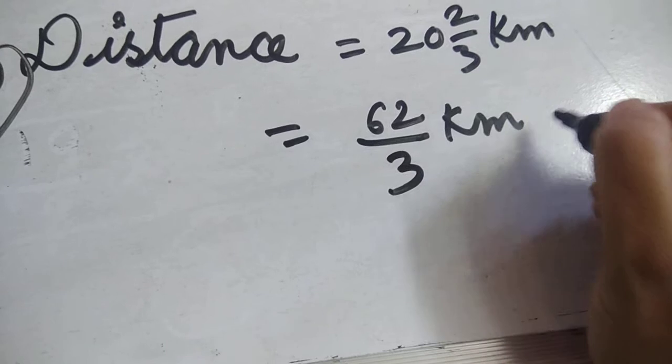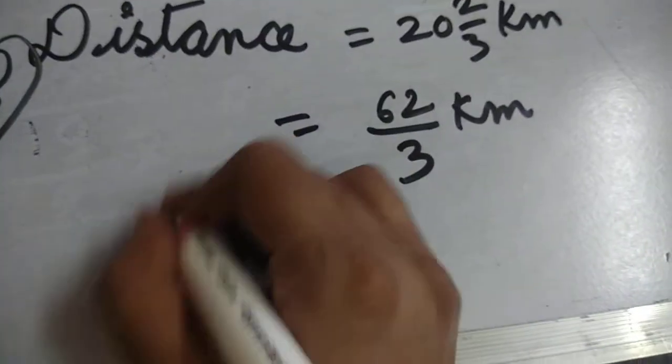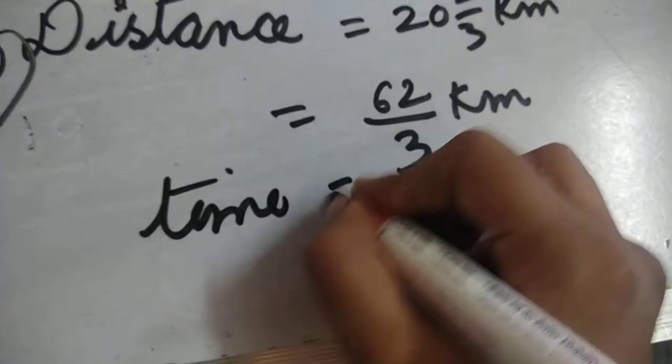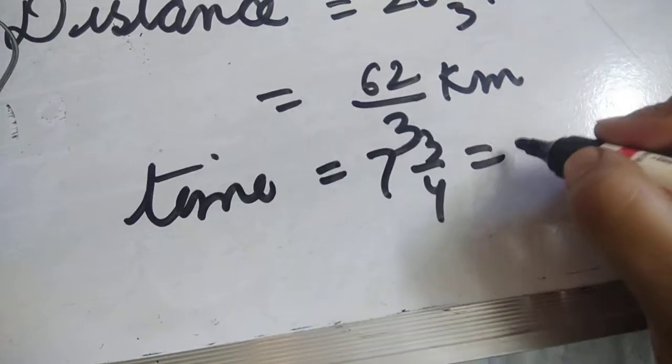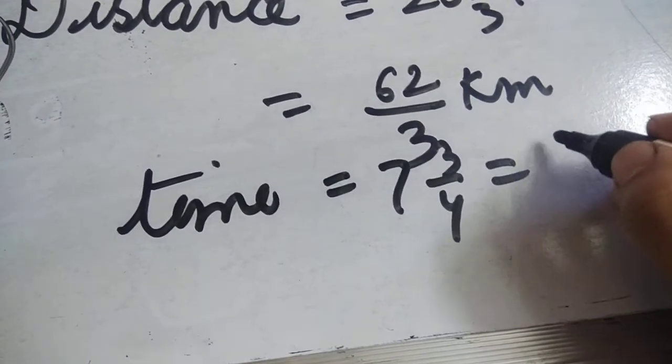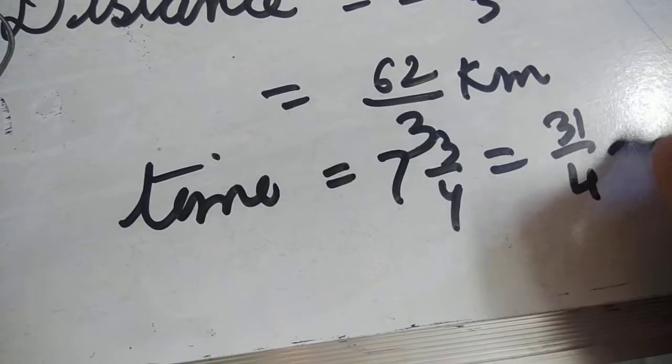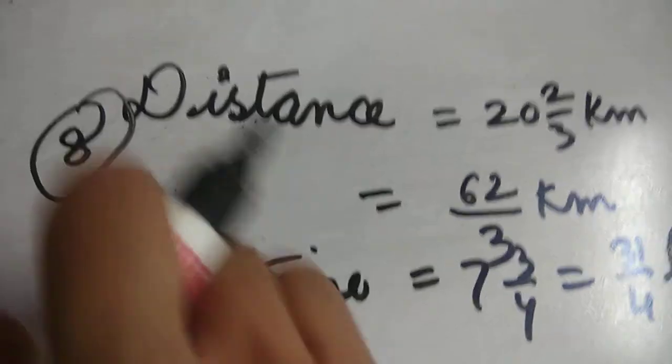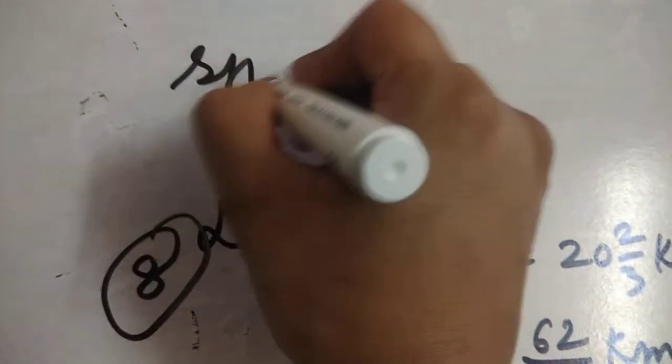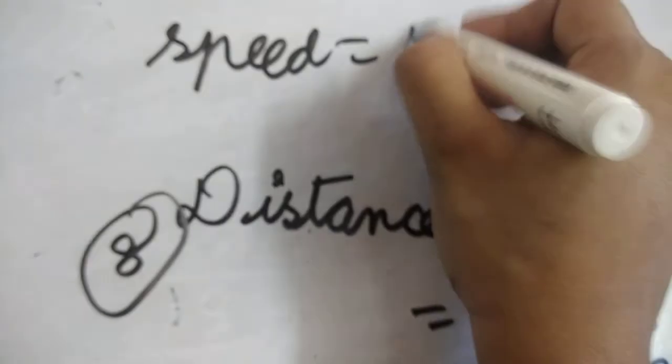Time given is 7 and 3/4. Simplify the same way: 7 times 4 is 28, plus 3, so 31/4 hours. Distance is given, time is given. The formula for speed equals distance upon time.